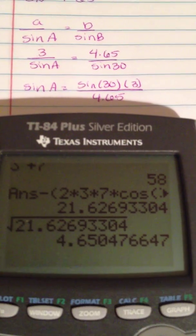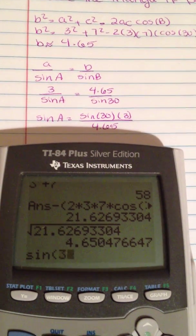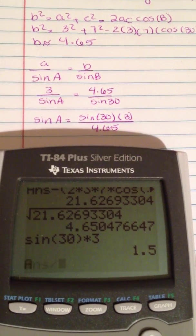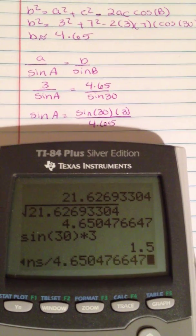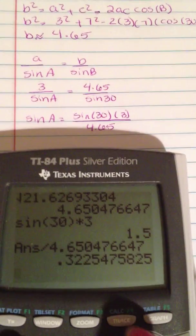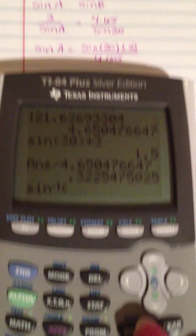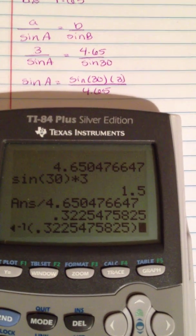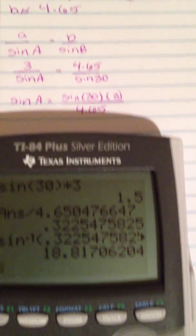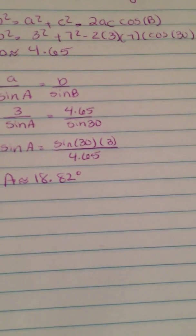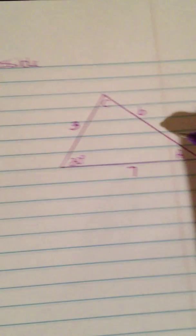It's gonna be sine of 30 times 3, divided by my answer, which was 4.65. Then I need to do inverse sine to get the angle, so second sine, inverse of my answer. It's about 18.82°, so A is about 18.82°.